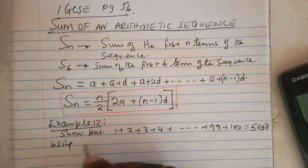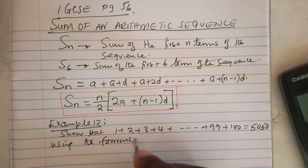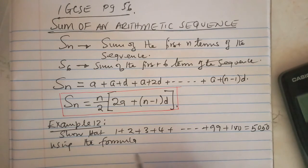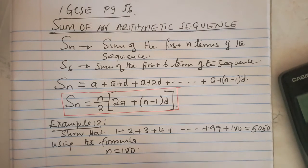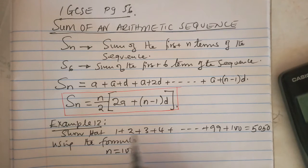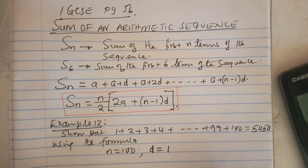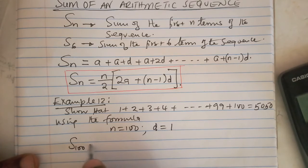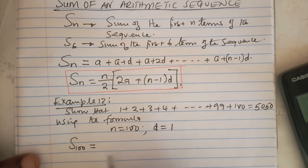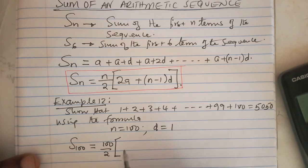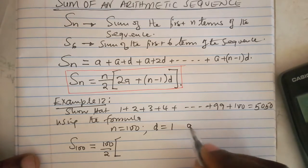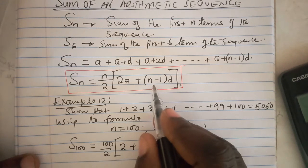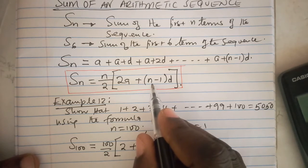Using the formula, what is the number of terms? We go all the way to term 100, so n equals 100. What is the difference? 2 minus 1 is 1, 3 minus 2 is 1, so d is 1. The sum of the first hundred terms is given by n over 2, 100 over 2, multiplied by 2a. What is a? Our a is 1, the first term.